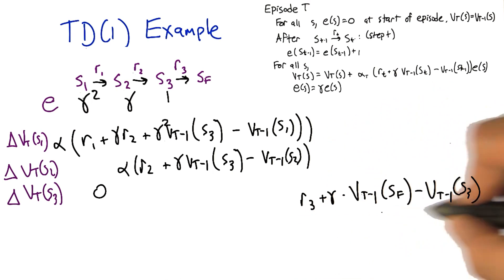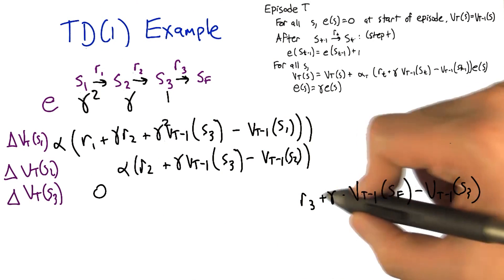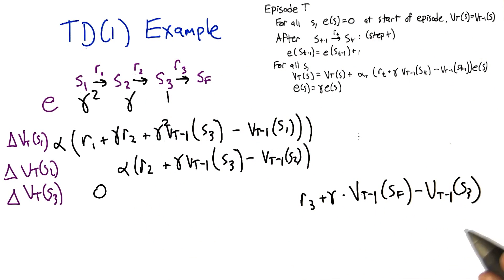And this update is going to get applied to all the states proportional to their eligibility. So we can do that same thing again, just add this quantity into all these things and simplify. Does that sound okay? It does sound okay, and I think I finally see where this is going.